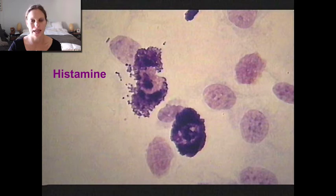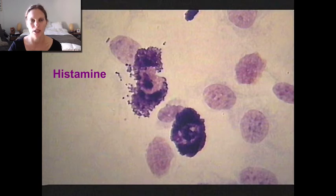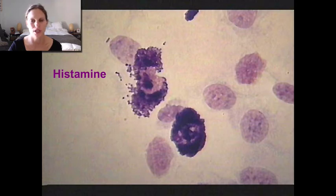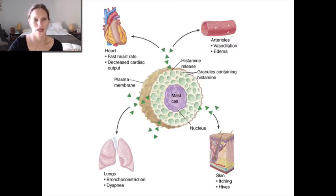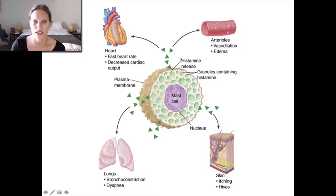Histamine is an inflammatory signaling molecule — a paracrine, meaning it's released from one cell and acts on a cell right next to it. Traditionally, histamine is released from mast cells or basophils. It's a local irritant, essentially irritating whatever tissue is around it. When a mast cell degranulates, it releases histamine along with other things, and wherever there's a histamine receptor, histamine will have an action.